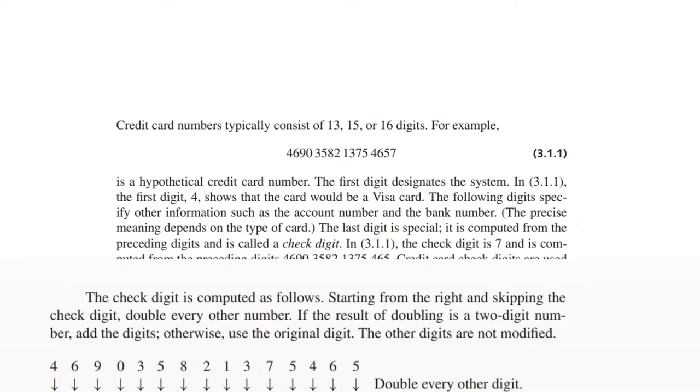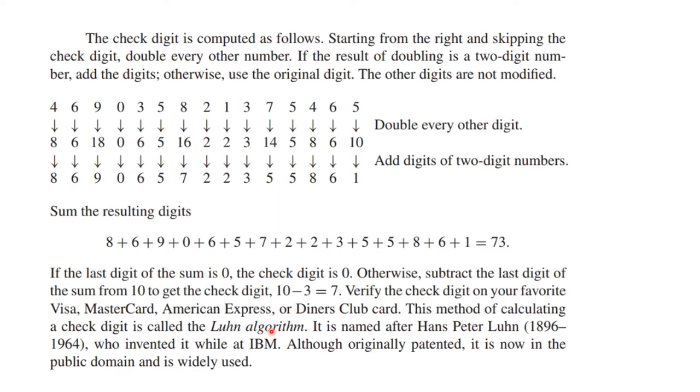A common way of doing this is using the Luhn algorithm. It's named after an IBM fellow, and it was originally patented, but now it's in the public domain and is widely used. The algorithm works by doubling every second digit and adding the digits that you have. So this will be one, this will be six, this will be five. Then you sum the resulting digits to get 73. If the last digit of that sum is zero, then you put zero for the check digit. Otherwise, subtract the last digit from 10 to get the check digit. So in this case, 10 minus three - there's the three - is seven.